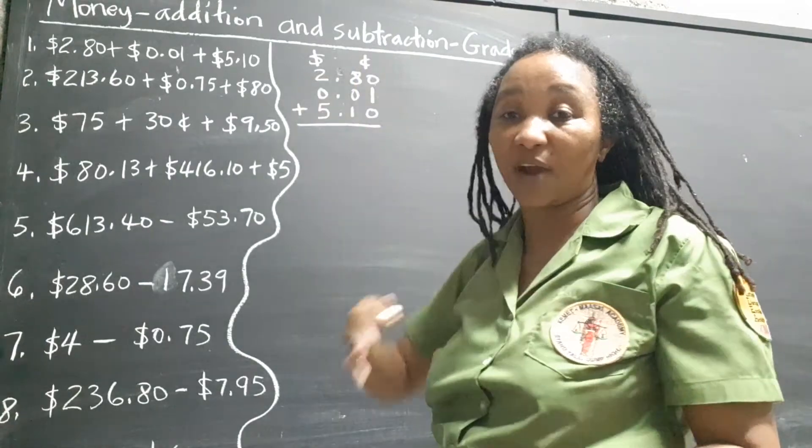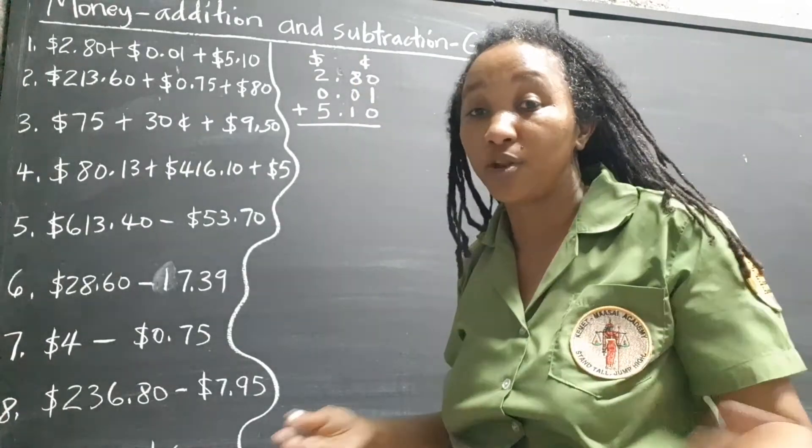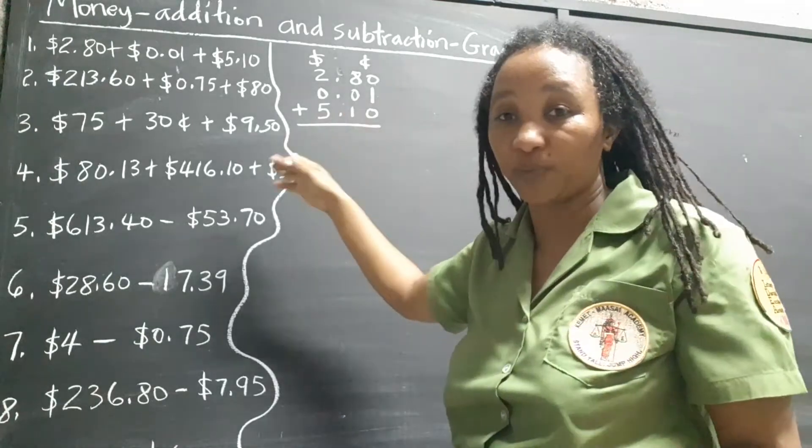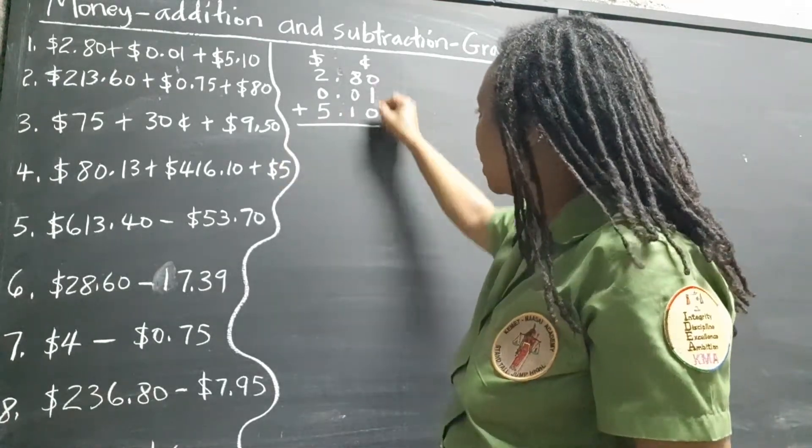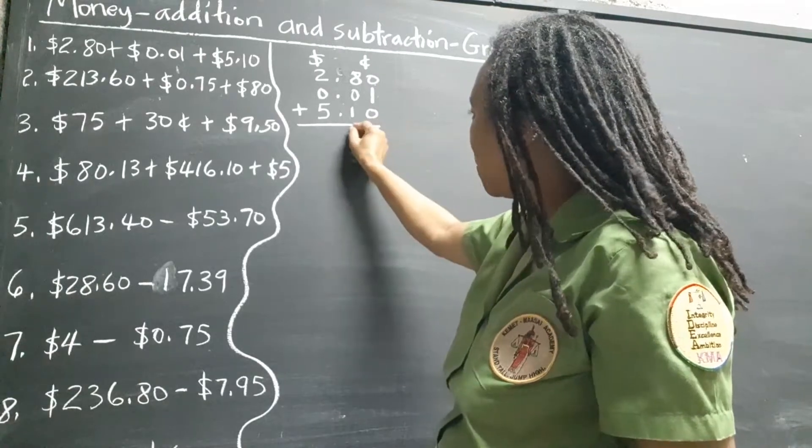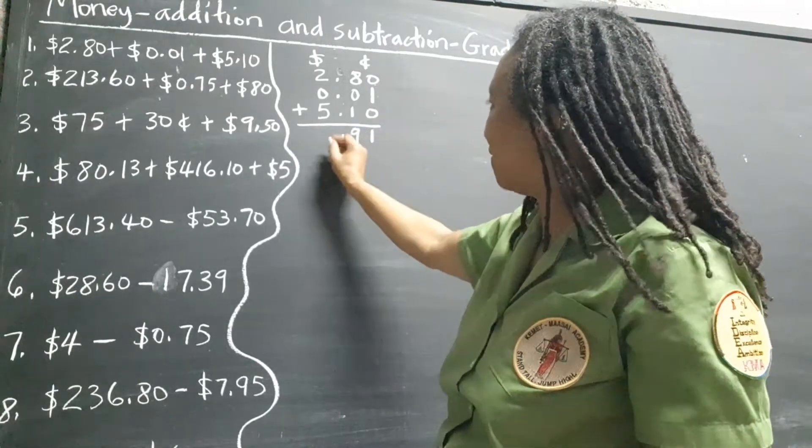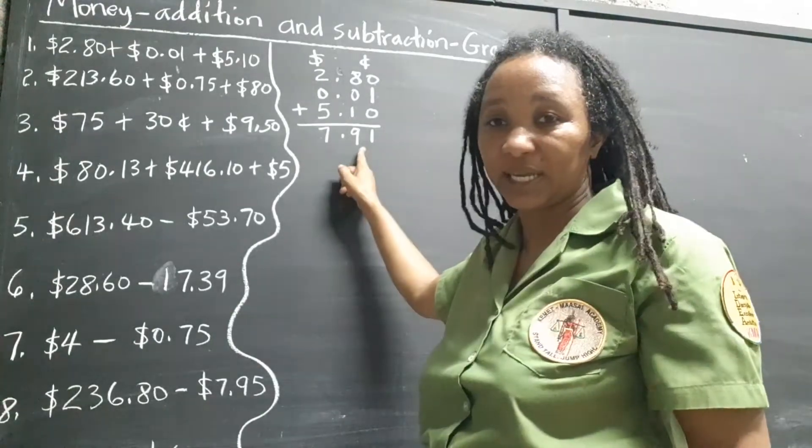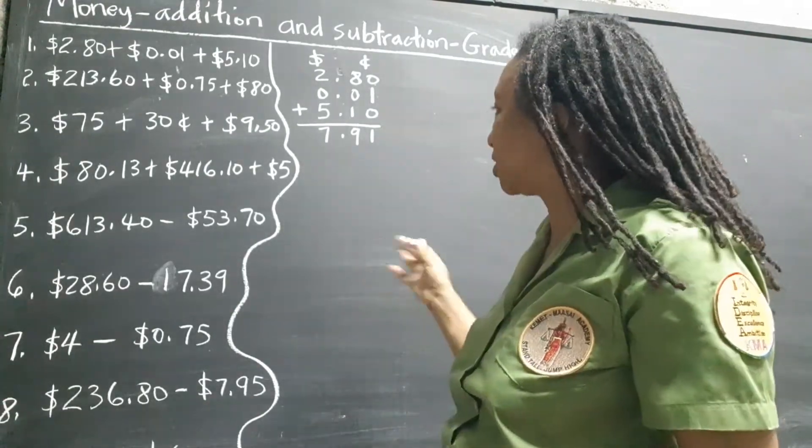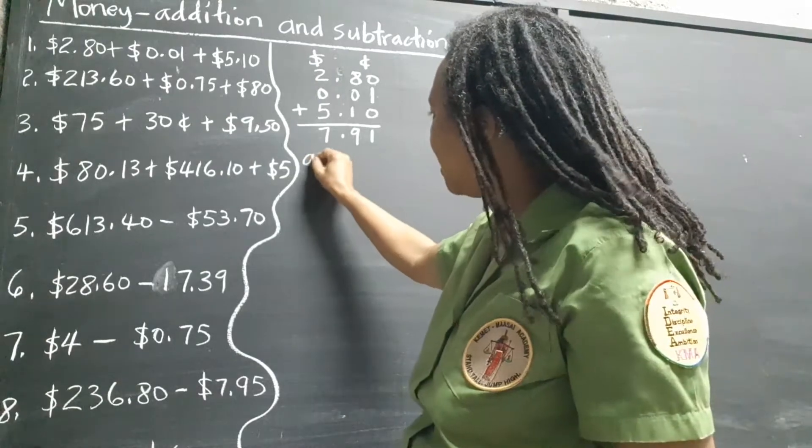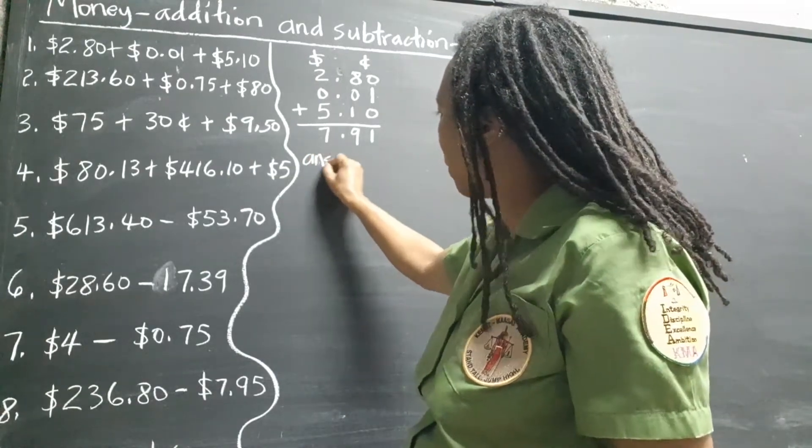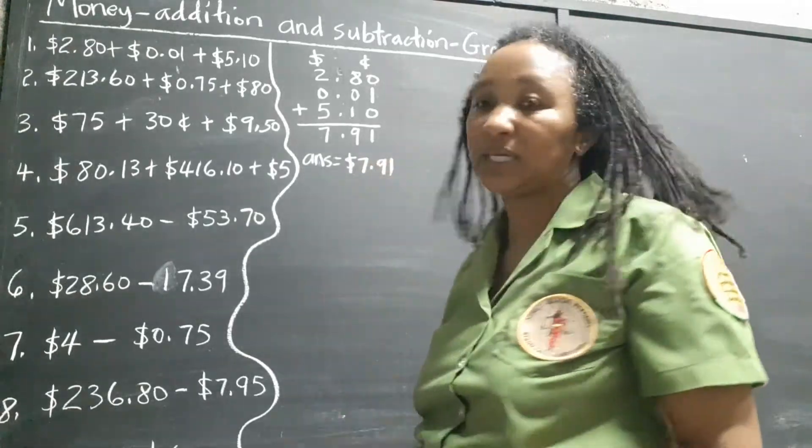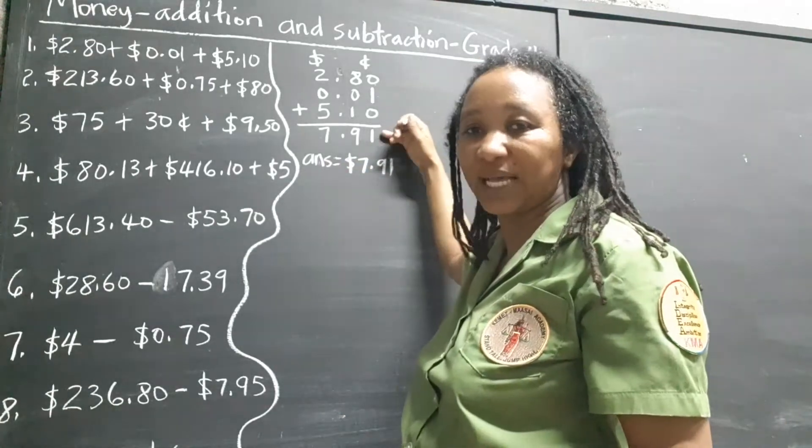See how many groups and carry over just like what we do normally. So the important thing is to get them lined up first. So one plus zero is one. Eight and one, nine. Five and two, seven. And we are done. $7.91. If we wanted to write the final answer, we will just put $7.91. But this is acceptable as it is.